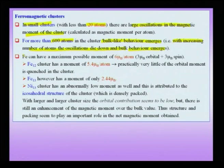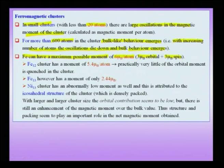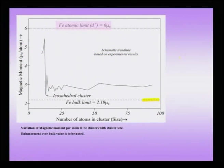Iron can have a maximum possible magnetic moment of about 6 μB per atom — 3 arising from orbital and 3 from spin contributions. In bulk iron, the orbital magnetic contribution is largely quenched due to strong interaction with the lattice. In the graph shown here, we are studying the number of atoms in the cluster — no longer a dimension in nanometers, but purely a number — against the magnetic moment per atom on the y-axis.